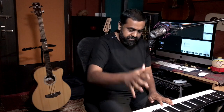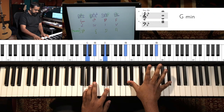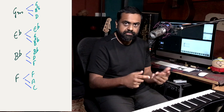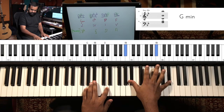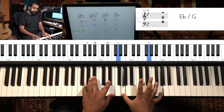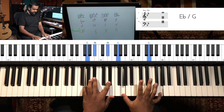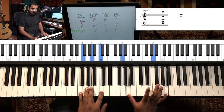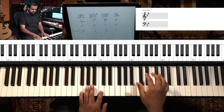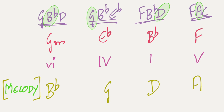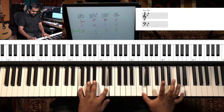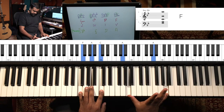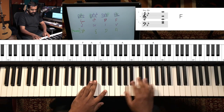For G minor I'm choosing B flat. For E flat major I could choose any of E flat, G, or B flat — I'm choosing G, which is the third degree. For B flat major I'm skipping to D, and for F major I'm playing A. Essentially I'm playing the thirds of each chord: B flat is the third of G minor, G is the third of E flat major, D is the third of B flat major, and A is the third of F major.